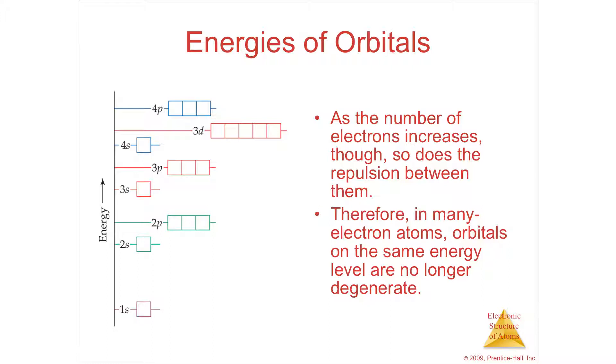Degenerate still exists in the subshells. For instance, there are three orbitals in the p, so those are degenerate, meaning they're all the same price, same rent. There are five orbitals in the d and seven orbitals in the f; those are all degenerate, they're the same price.